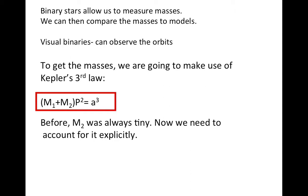To get the masses, we're going to make use of Kepler's third law, shown here with (M₁+M₂), the mass of the first star and the mass of the second star in units of solar masses, times P², the square of the period in years, equals a³, the semi-major axis of their orbit around the center of mass cubed.